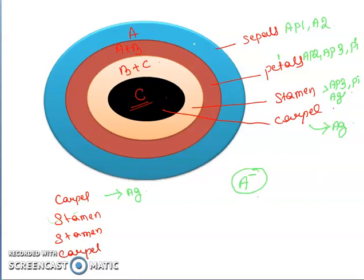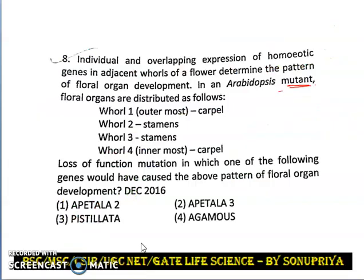Class A gene is responsible for APETALA1 as well as APETALA2. In the answer options, we have APETALA2 but not APETALA1. Since APETALA1 is not present in this option, the correct statement will be APETALA2.